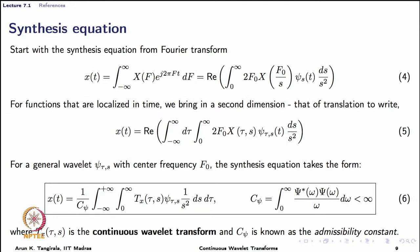Having understood how to intuitively arrive at the wavelet starting with a sinusoid, we now understand how to derive the synthesis equation in wavelet analysis starting from the Fourier synthesis equation. In equation 4 at the top, capital F is cyclic frequency and upper case X is the Fourier transform. This expression is rewritten using the scaling relation where S equals F0 over F, and dF is replaced with an incremental variable in scaling parameter.